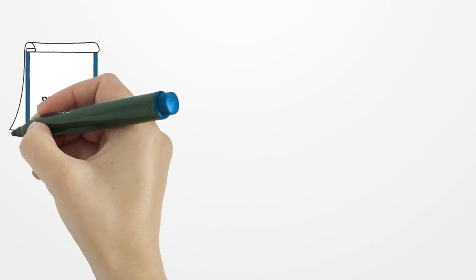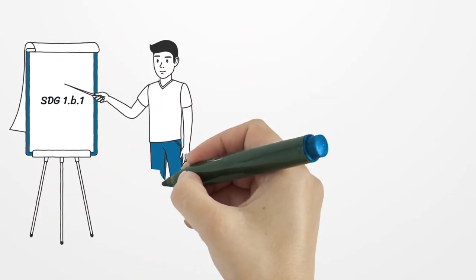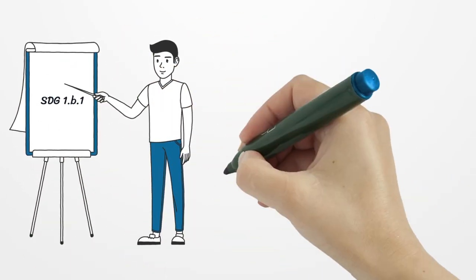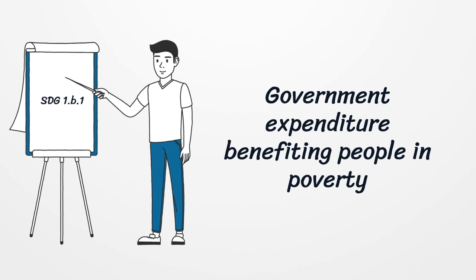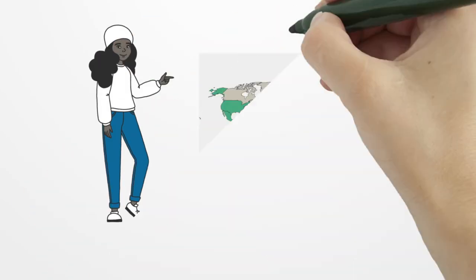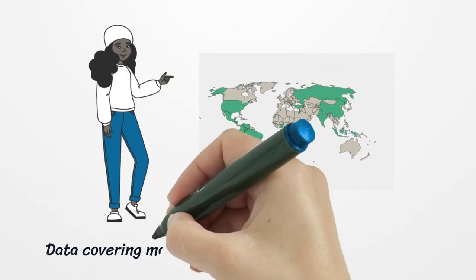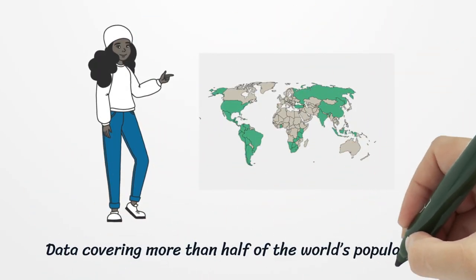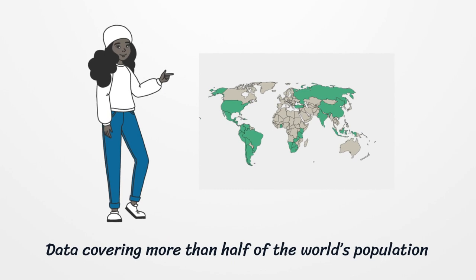It measures the proportion of government expenditure in education, health and direct transfers which directly benefit people who face monetary poverty. Data covering more than half of the world's population is now reported and helps us to better understand how governments' financing decisions are really aligned with poverty-reducing strategies.